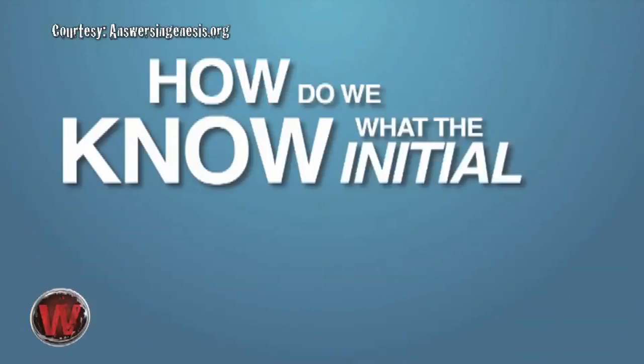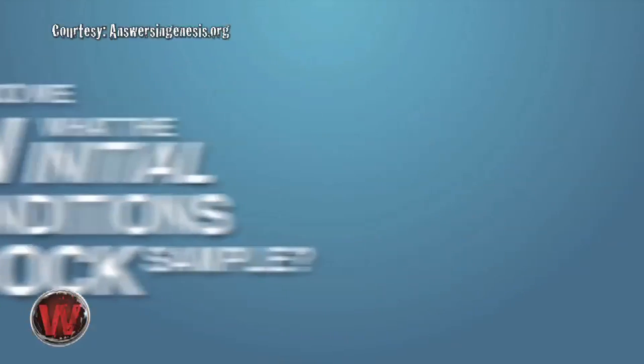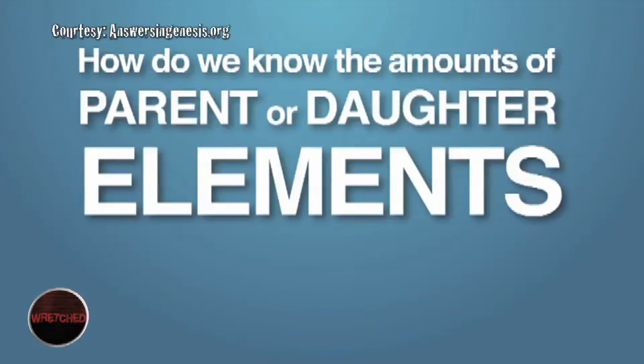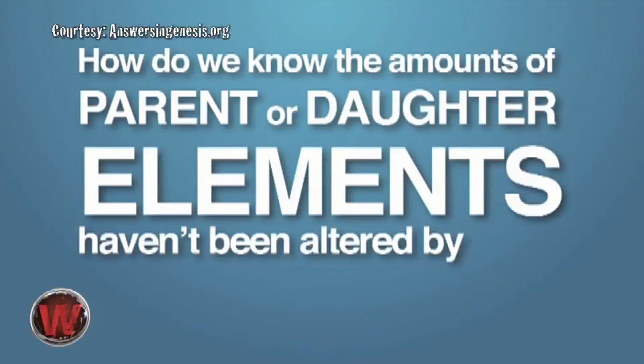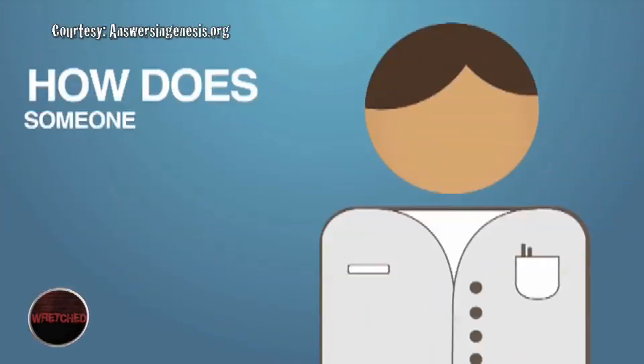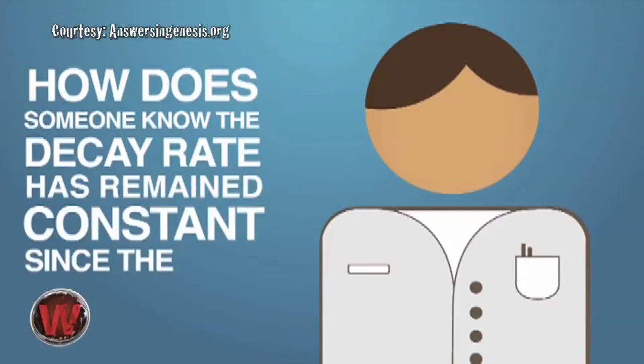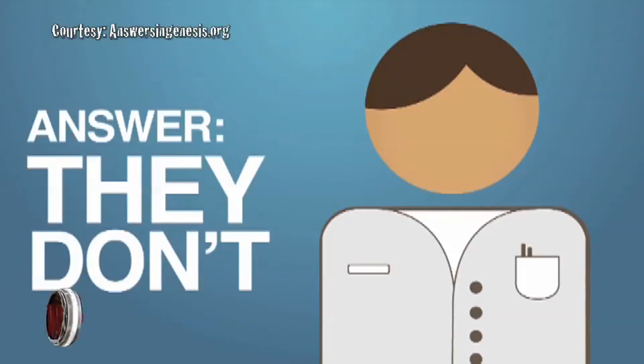For instance, how do we know what the initial conditions were in the rock sample? How do we know the amounts of parent or daughter elements now in that sample haven't been altered by other processes in the past? How does someone know the decay rate has remained constant since the rock formed? The answer is, they don't.